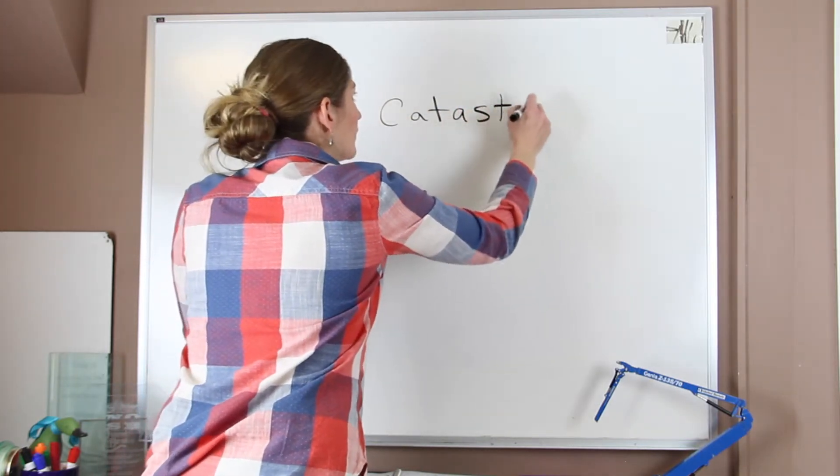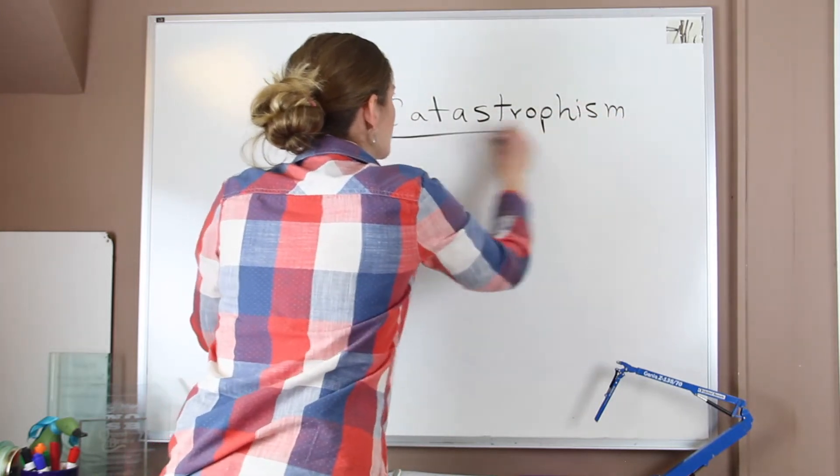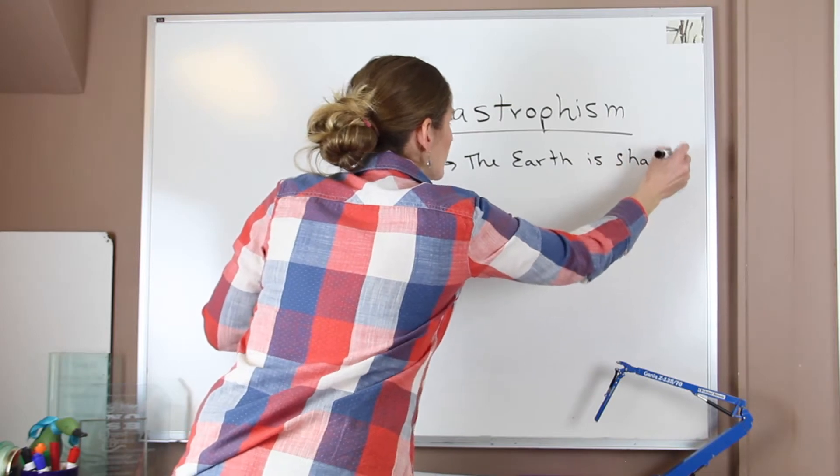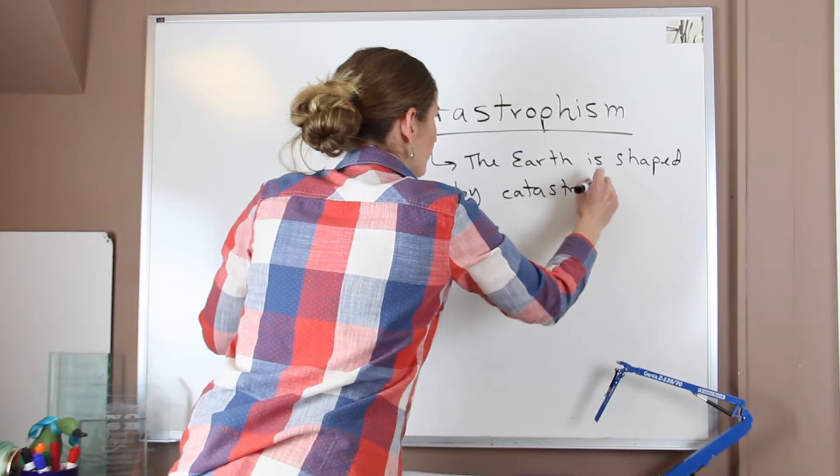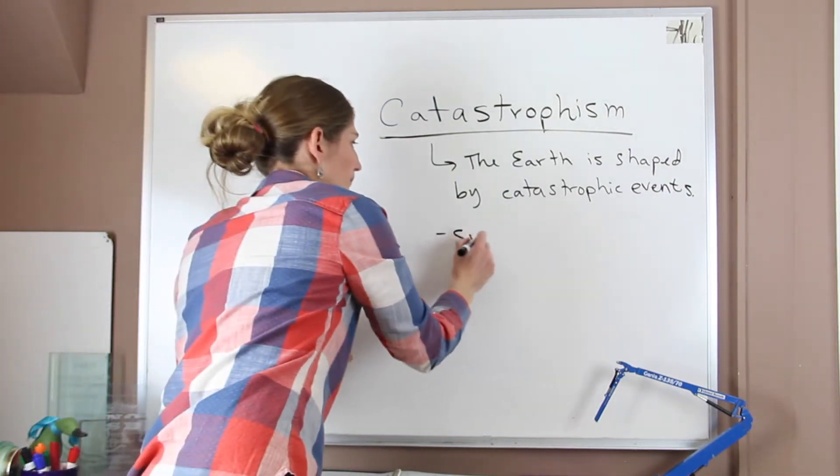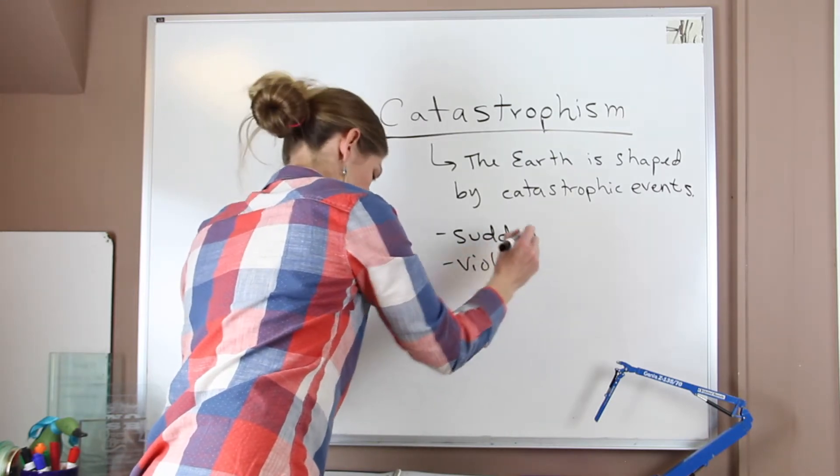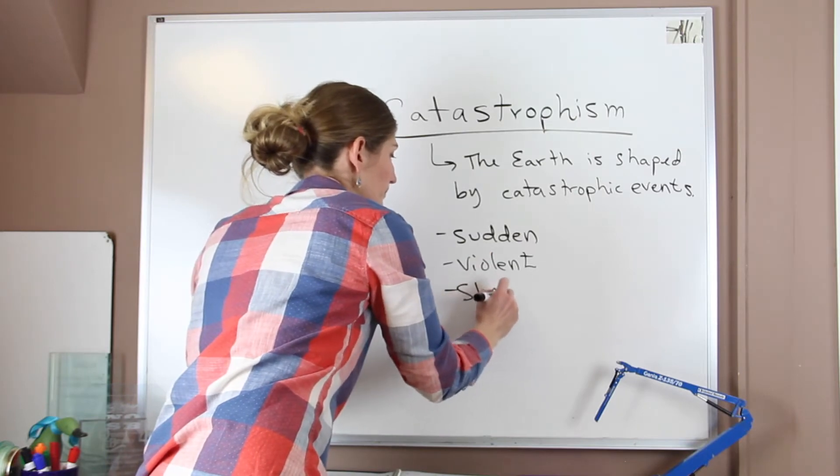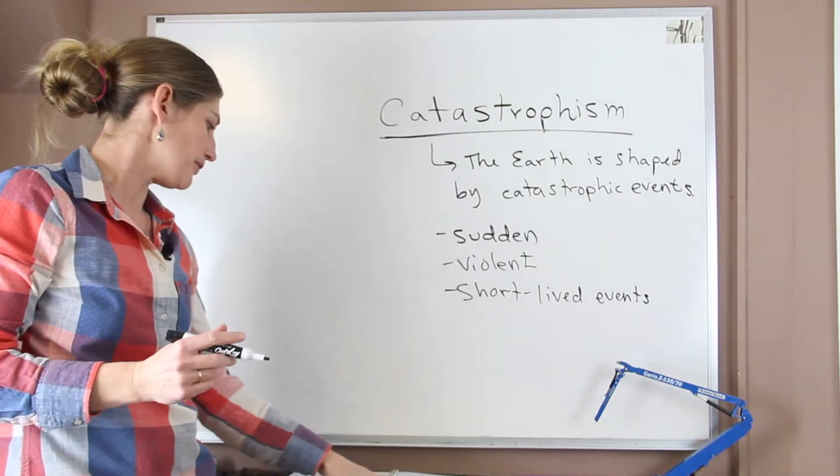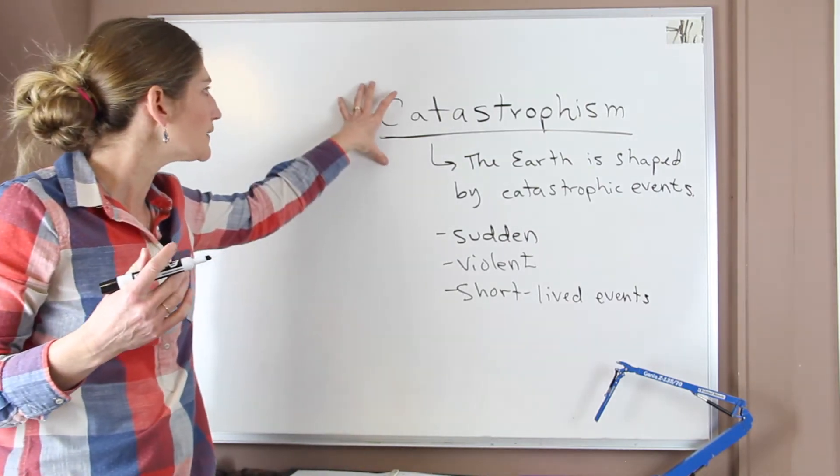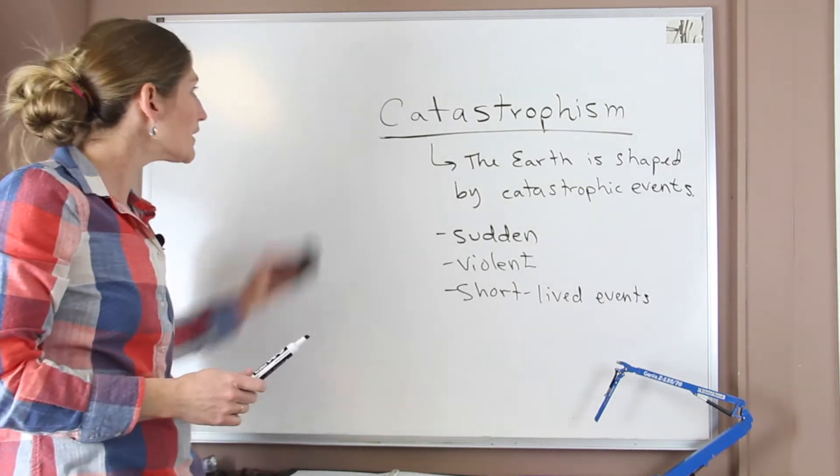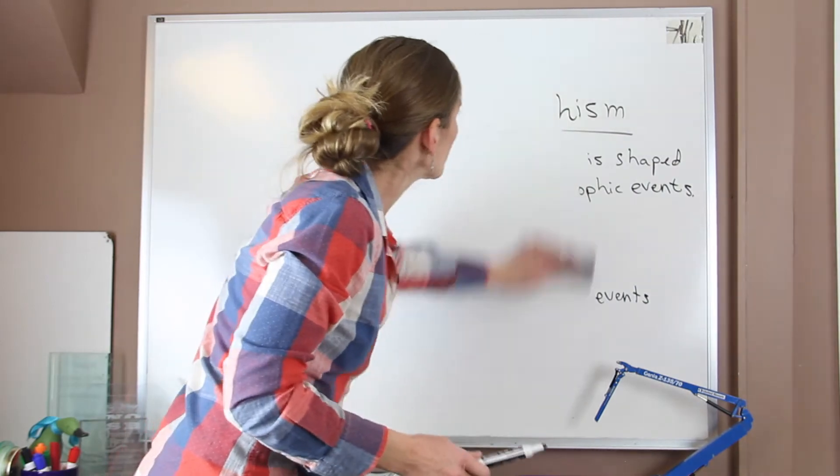Let me make sure I spell it correctly. So this is the idea that the Earth is shaped by catastrophic events. These events are very sudden, they're violent, and they are very short-lived. When you're trying to remember it, this would be like that biblical flood. People who fall into this field are really trying to make all the observations that they see on the Earth fit into what is explained in the Bible. This is not what geologists believe today.